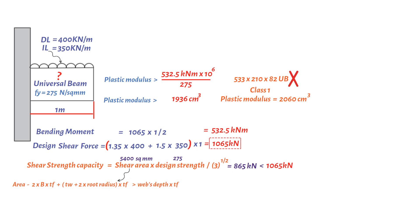In this case, because the length of the cantilever is very short, the selection of section will be determined from the shear strength, which is more critical than bending.